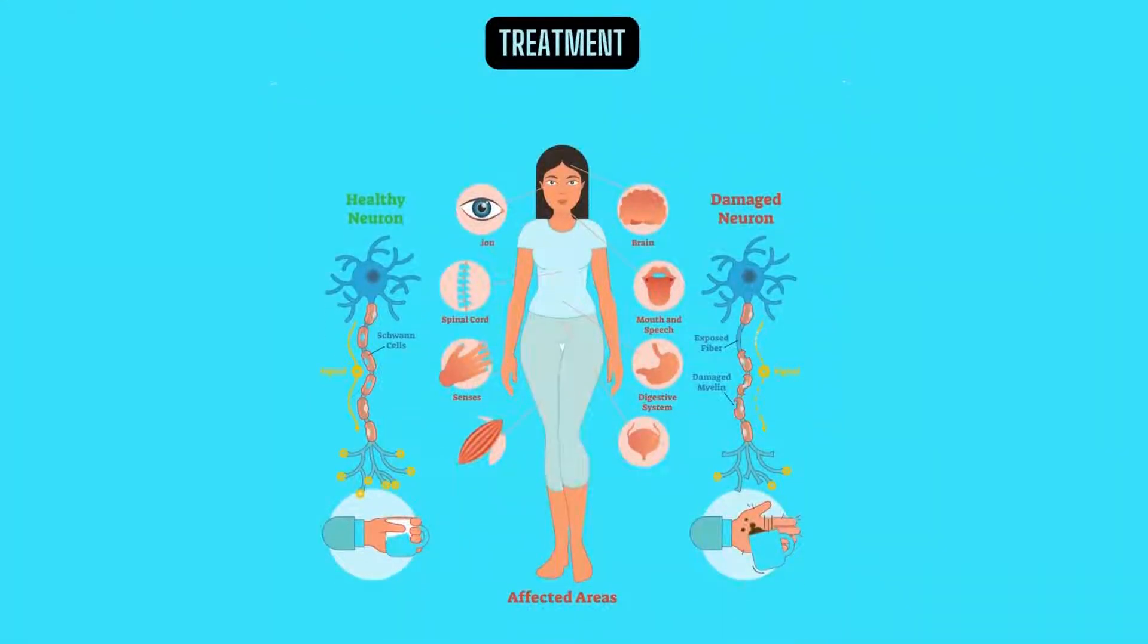There is no cure for multiple sclerosis. Treatment typically focuses on speeding recovery from attacks, slowing the progression of the disease, and managing MS symptoms. Some people have such mild symptoms that no treatment is necessary. The most commonly used medicines in MS are corticosteroids, such as oral prednisone and intravenous methylprednisolone, prescribed to reduce nerve inflammation. Side effects may include insomnia, increased blood pressure, increased blood glucose levels, mood swings, and fluid retention.